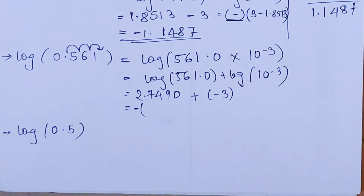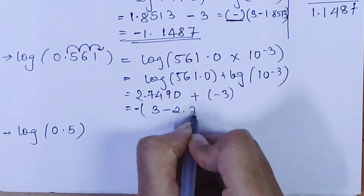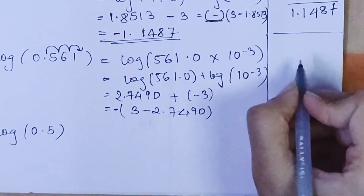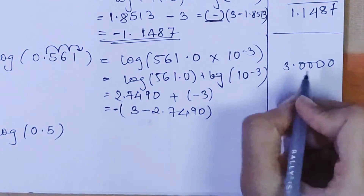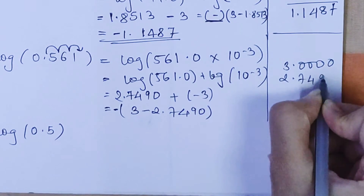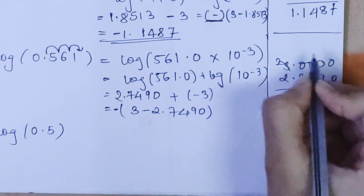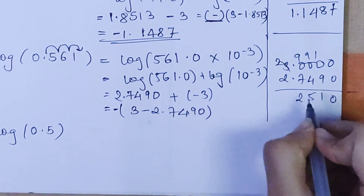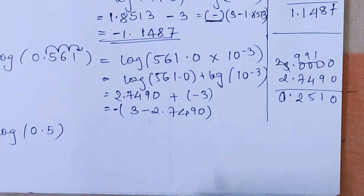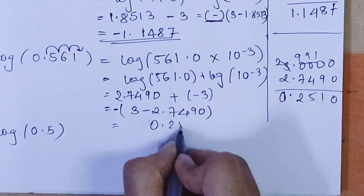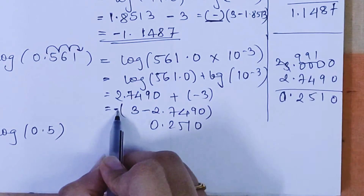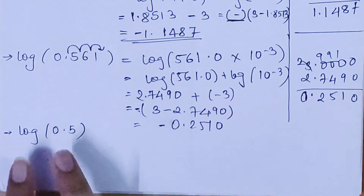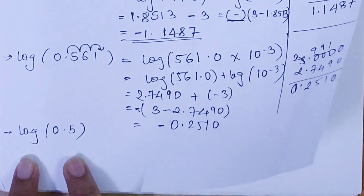Now take the minus sign common: −(3 − 2.7490). Subtracting: 3.0000 − 2.7490 = 0.2510. So the final answer is −0.2510.